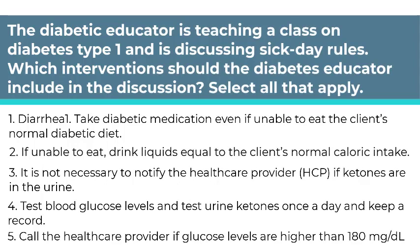The diabetic educator is teaching a class on Type 1 diabetes and is discussing sick day rules. Which interventions should the diabetes instructor include? Select all that apply. Number 1: Take diabetic medication even if unable to eat the client's normal diabetic diet. Number 2: If unable to eat, drink liquids equal to the client's normal caloric intake. Number 3: It is not necessary to notify the healthcare provider if ketones are in the urine. Number 4: Test blood glucose levels and urine ketones once a day and keep a record. Number 5: Call the healthcare provider if glucose levels are higher than 180 mg per deciliter. This is an analysis question in the planning phase. To answer this question, you need to determine which interventions are correct regarding sick day rules and how insulin is affected when a patient is sick.